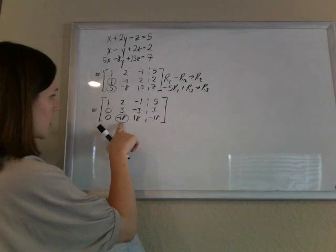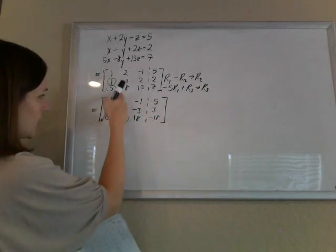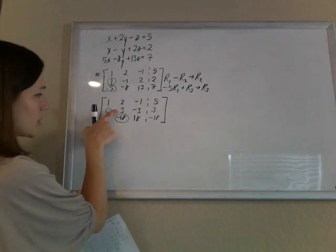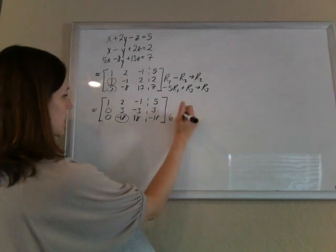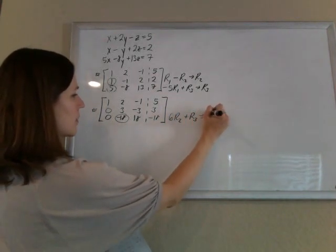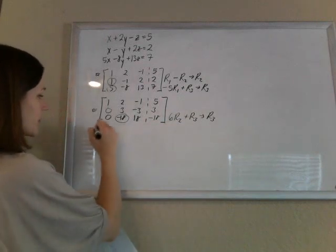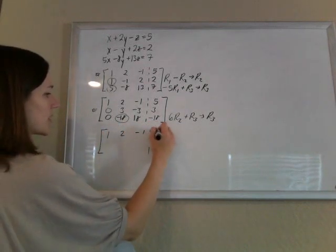So what I'm going to do is I'll take, using that second row again to get my zero in the second column, I'll do 6 times this row plus that row. So 6 times row 2 plus row 3 to make my new row 3. Leaving those first two rows exactly the same.